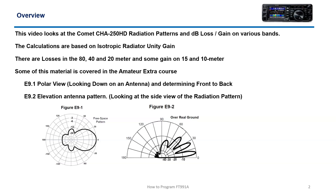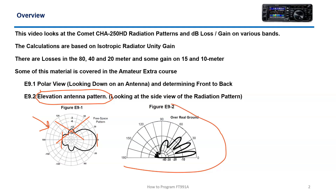Some of this material is covered in the amateur extra. The main thing we're going to look at today is what's called the elevation antenna pattern. This is a polar view where you would be looking down — you might say this is where you'd look at the front-to-back ratio — but we're going to strictly be looking at the elevation pattern and the maximum radiation lobe, the angle, and the half 3 dB and plus 3 dB intersection points.